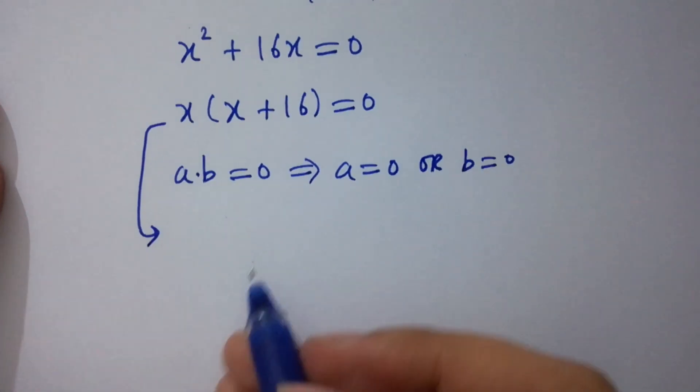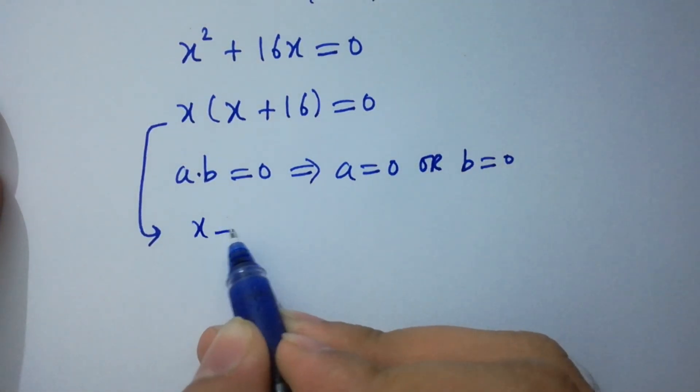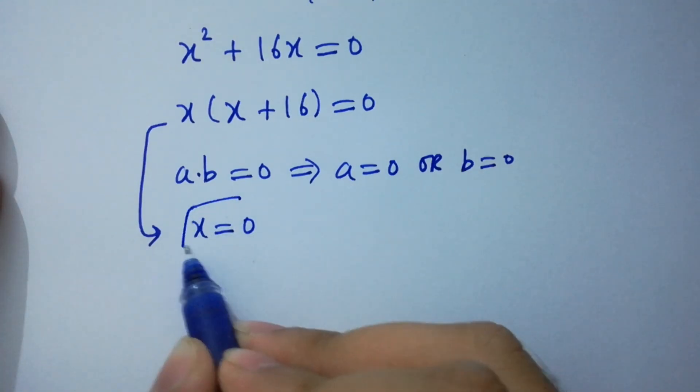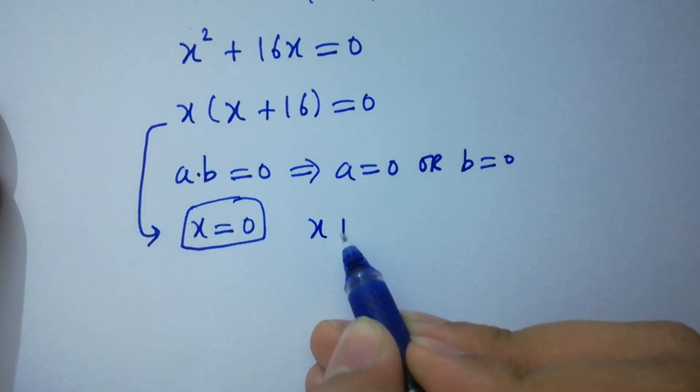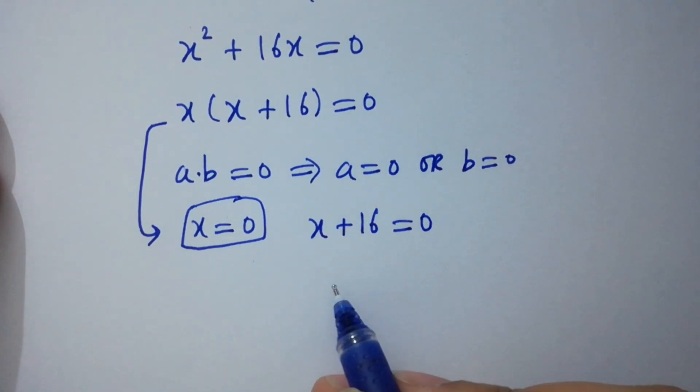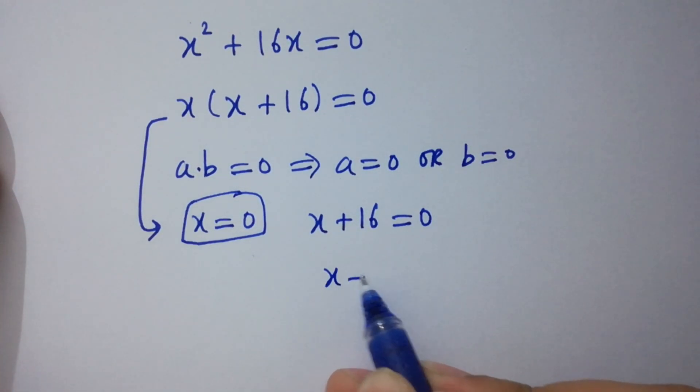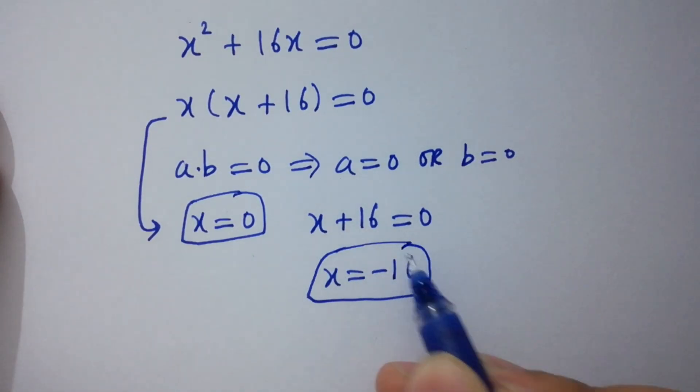Then it will be x = 0, which is the value of x, or x + 16 = 0, so x = -16, which is also the value of x. This is method 1.